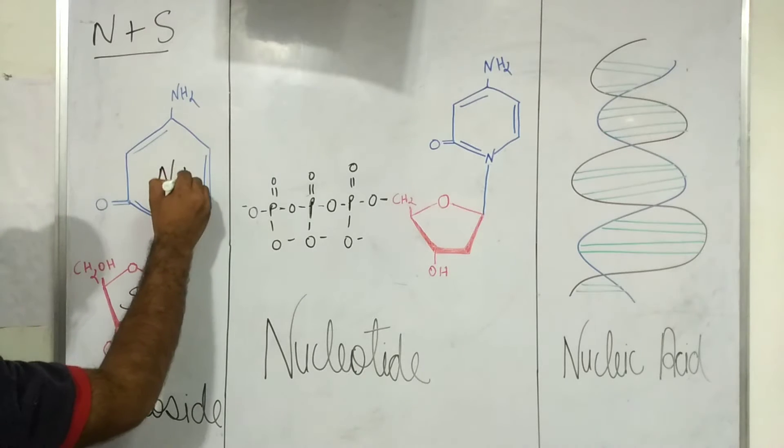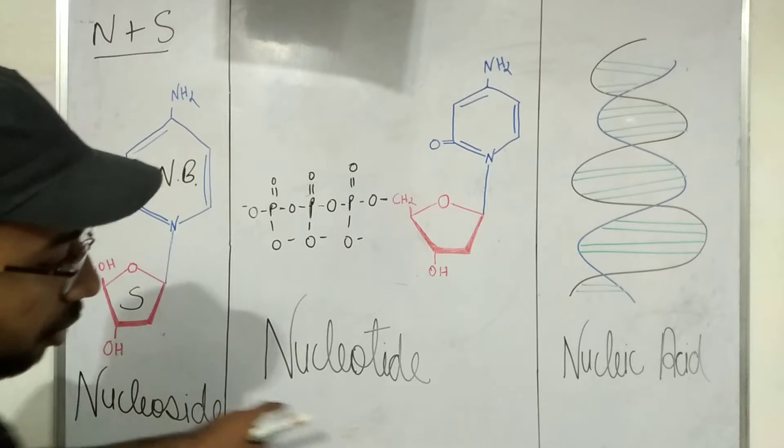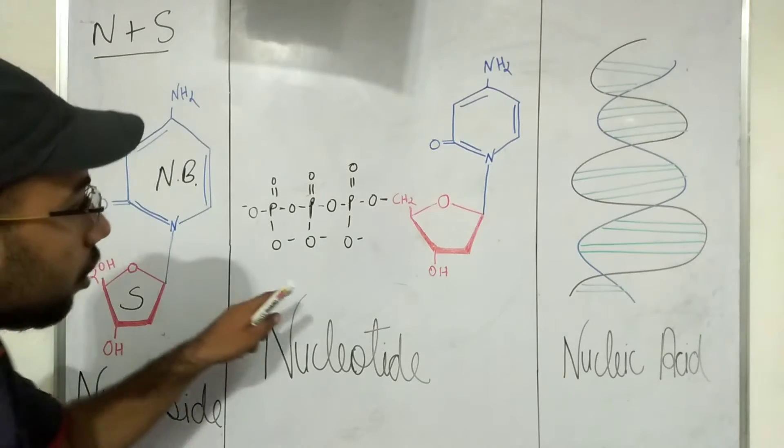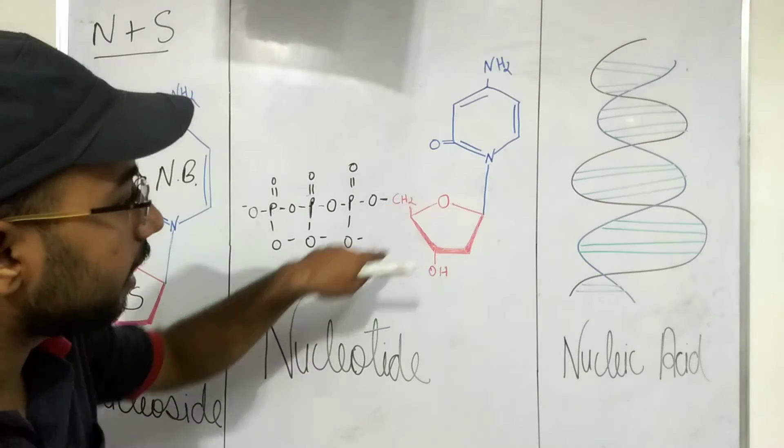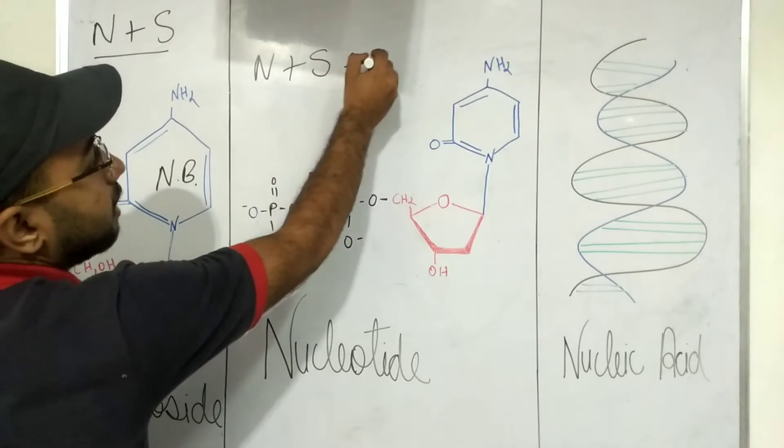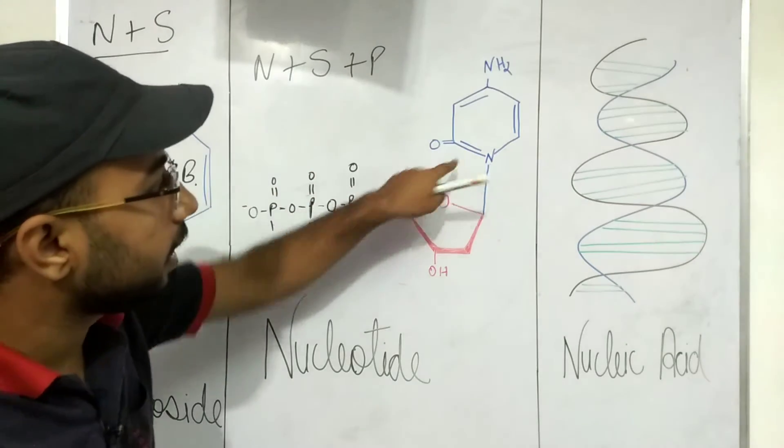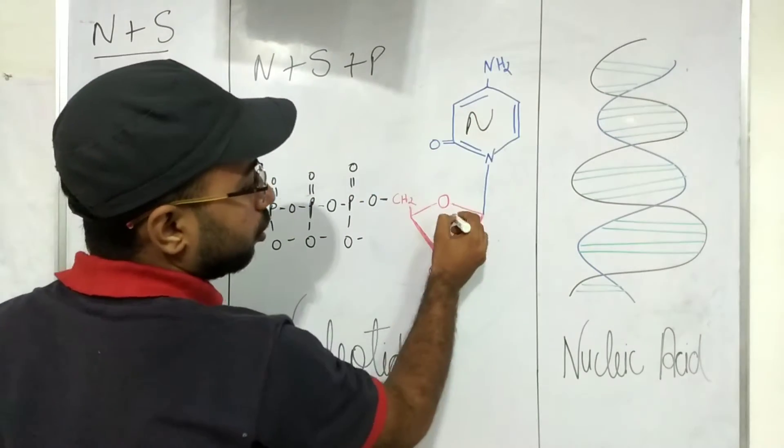This nitrogen base is binded, this is a sugar, and this is the nitrogen base which is binded to each other, known as nucleoside. Okay, while the nucleotide is what? Nucleotide is what?